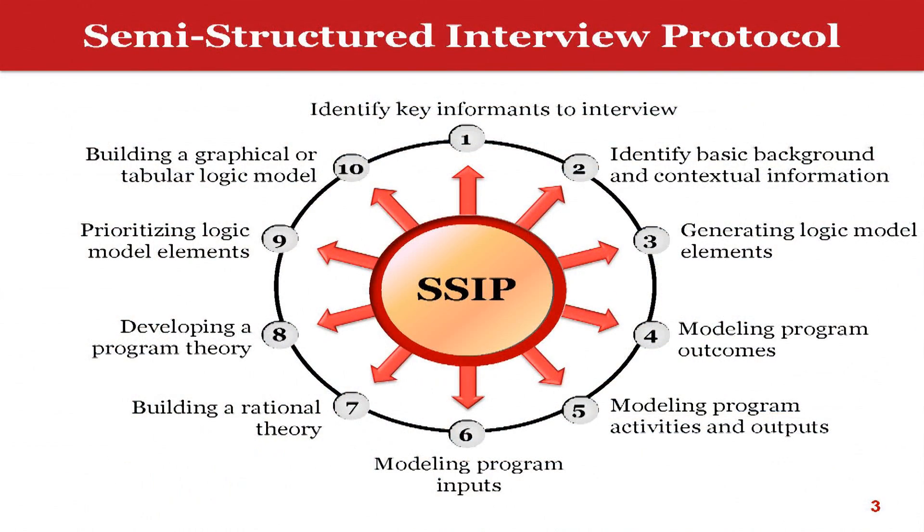Building a rational theory is another step where we are always asking the interviewee whether these outcomes are realistic, meaningful, and specific enough. We want to make sure they are measurable — how would you measure this particular outcome? For example, if their outcome is for all children to go to college, that is not really a realistic outcome for a ready-to-read program. So we want to make sure they have an understanding of that.